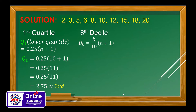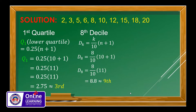To find the 8th decile, we use D sub k = (k/10) × (n + 1). Here k = 8 and n = 10, so (8/10) × 11 = 8.8. Rounding up gives us the 9th position. The 9th value in our data is 18, so the 8th decile equals 18.